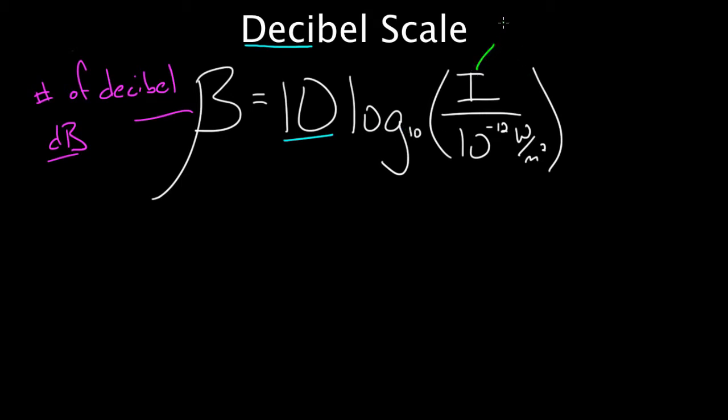I is the intensity of the sound wave. So this is the intensity. And in physics, intensity is defined to be the power divided by the area. And what this means, think about it this way. You've got your ear.